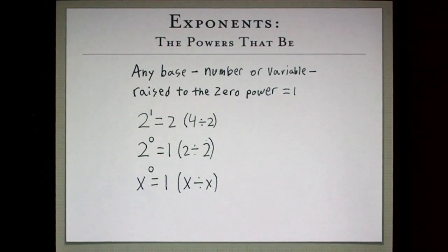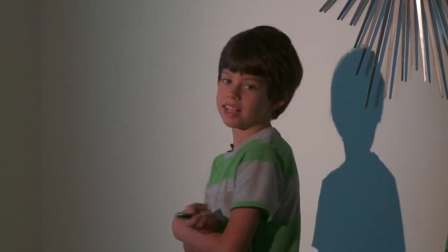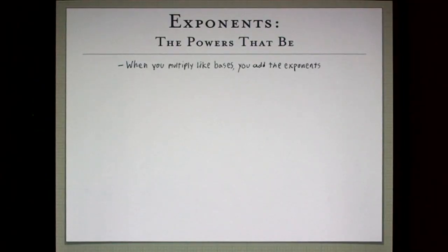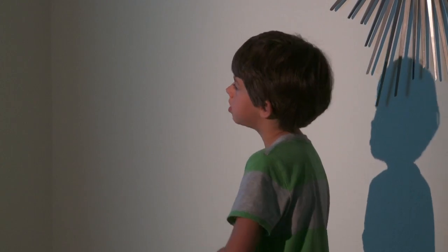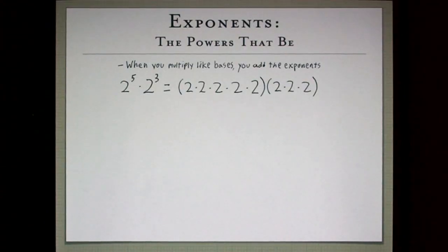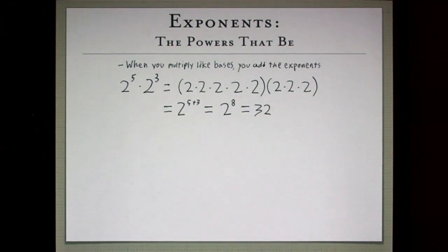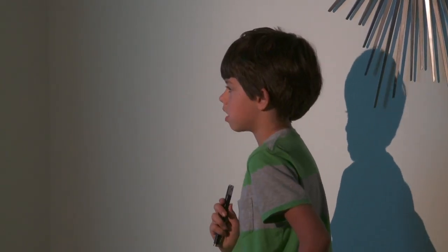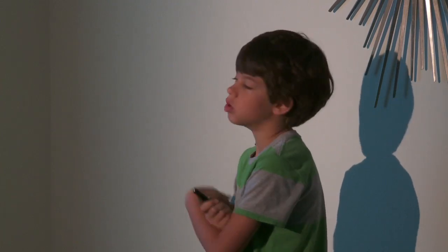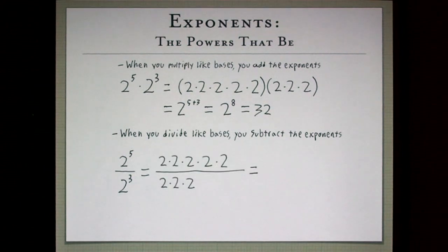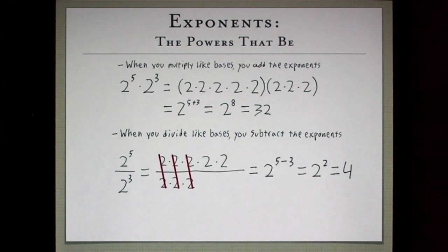Also, x to the zero — a variable to the zero — equals one, which is x over x. When you multiply like bases, you add the exponents; this is called the product rule. Two to the fifth times two to the third equals two to the fifth plus three, which is two to the eighth, equals 32. And when you divide like bases, you subtract the exponents — the quotient rule. Two to the fifth over two cubed: three twos cancel out, leaving two to the five minus three, which is two squared equals four.